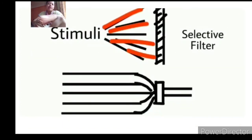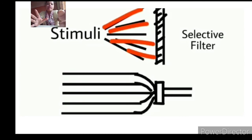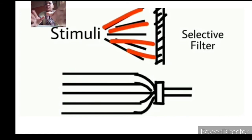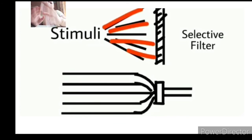This is the diagram of how it looks. These are the stimuli and this is a selective filter. Among all the stimuli, only one or two particular stimuli pass on to higher level processing for encoding and decoding information. Everything left outside the selective filter barrier gets deleted from our memory.